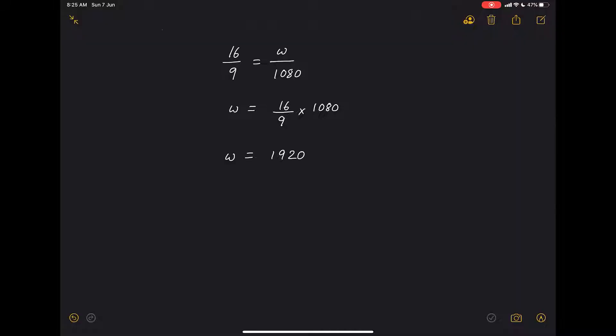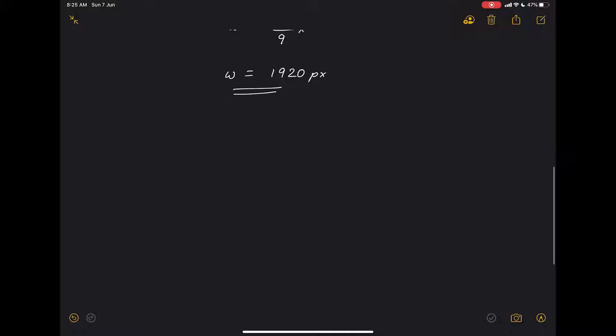So we just calculated that there are 1920 pixels along the width of the video. But we made a mistake — can you guess what it is? Teachers usually deduct marks for it in exams. We didn't mention the unit, so this is 1920 pixels. Coming back to the very first question: what is the resolution of the video you're watching, assuming you're watching it in 1080p?